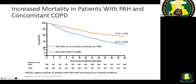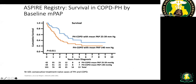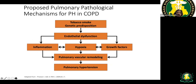As pulmonary pressures rise with comorbidities, mortality in PH-COPD patients increases. Patients with mean PA pressure above 40 have the worst outcomes. Management starts with smoking cessation — vaping and hookah included — as there is genetic predisposition to endothelial dysfunction. Hypoxia is a powerful trigger for pulmonary vasoconstriction and vascular remodeling, leading to pulmonary hypertension.